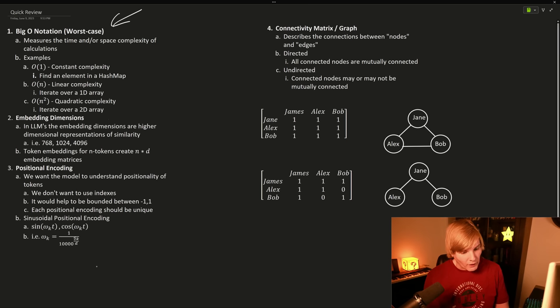Otherwise called worst case, this measures the time or space complexity of doing our calculations - meaning if we add an element to something, how much are we going to increase the CPU time or memory usage? The most common examples would be O of 1, otherwise called constant complexity.